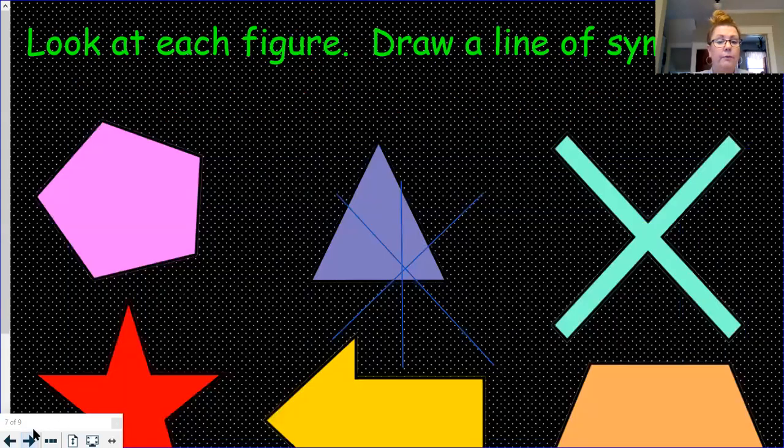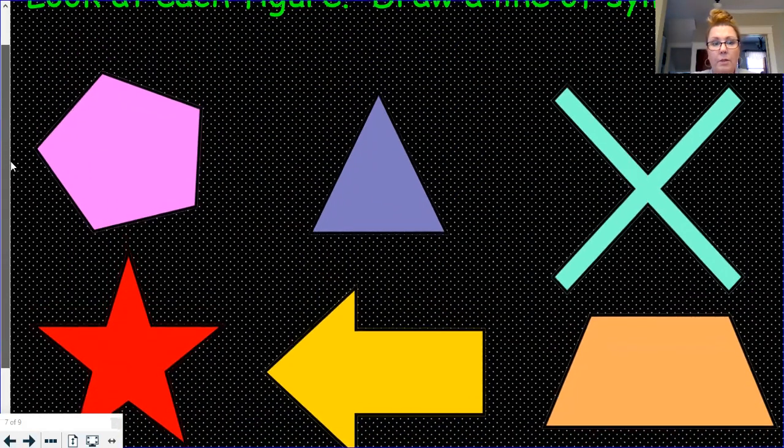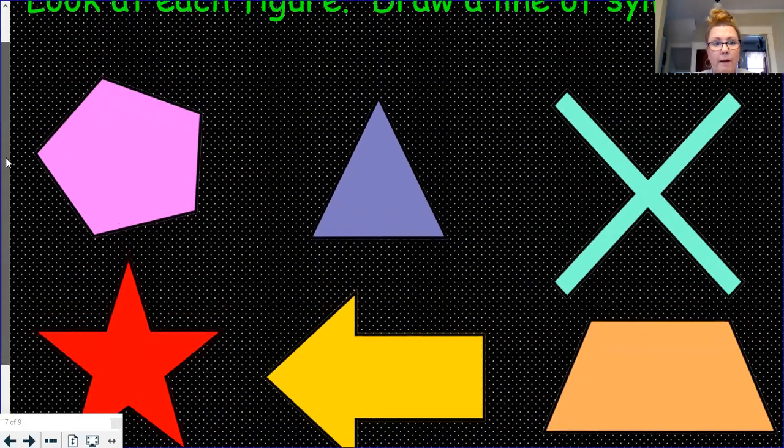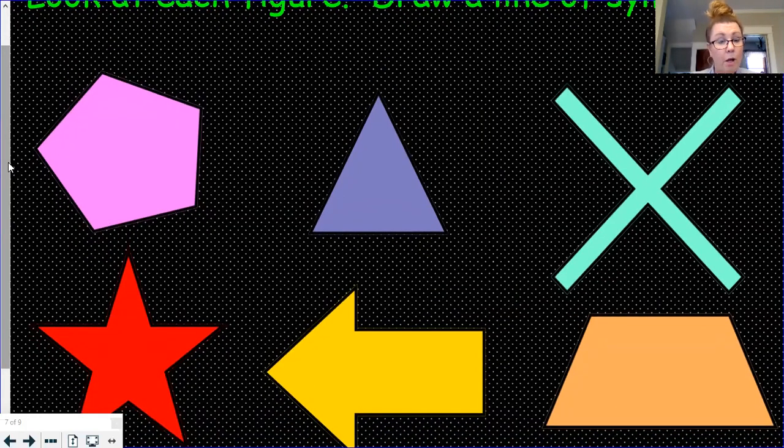Here's a little something for you to explore. I would like you to pause me again. Yep. And then take a look at these figures and figure out where their lines of symmetry are. Some of them have more than one. And then unpause me and we will check together. So this is my pause face this time.